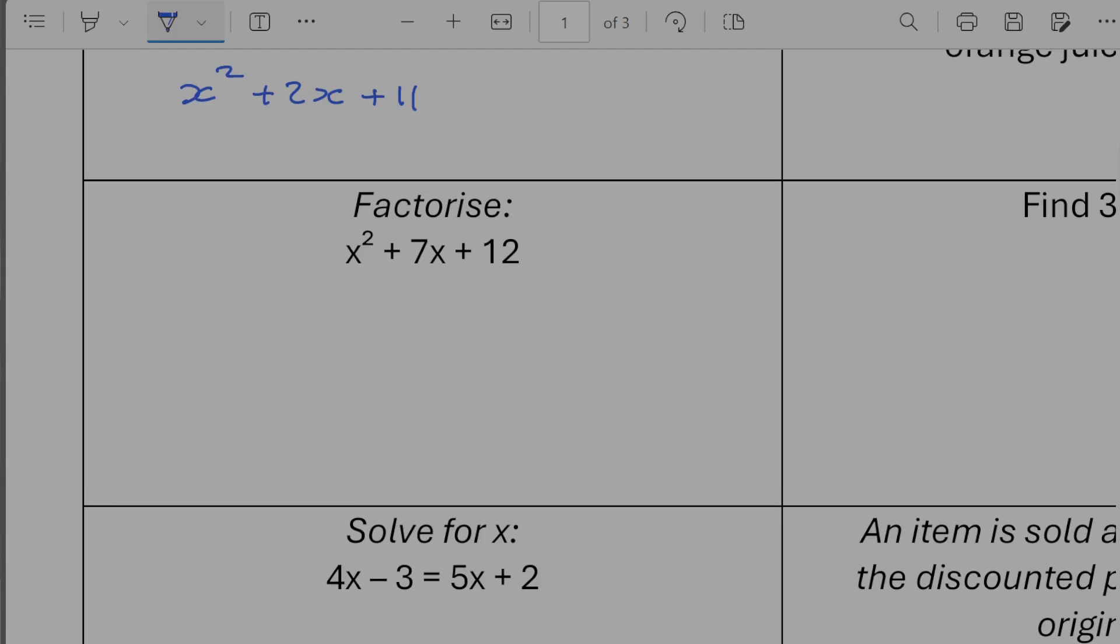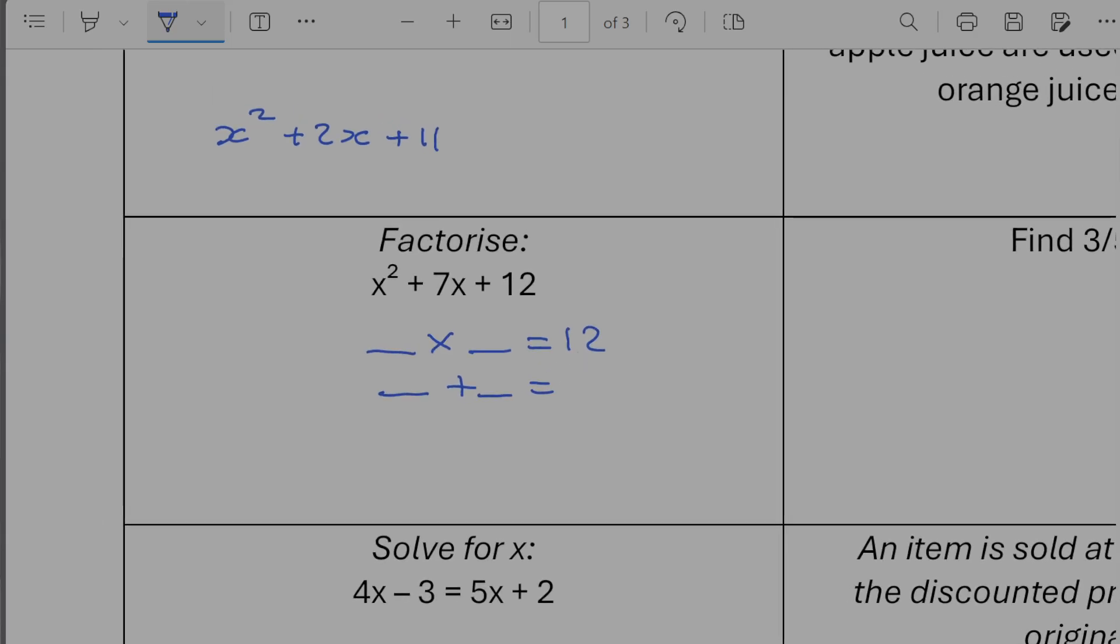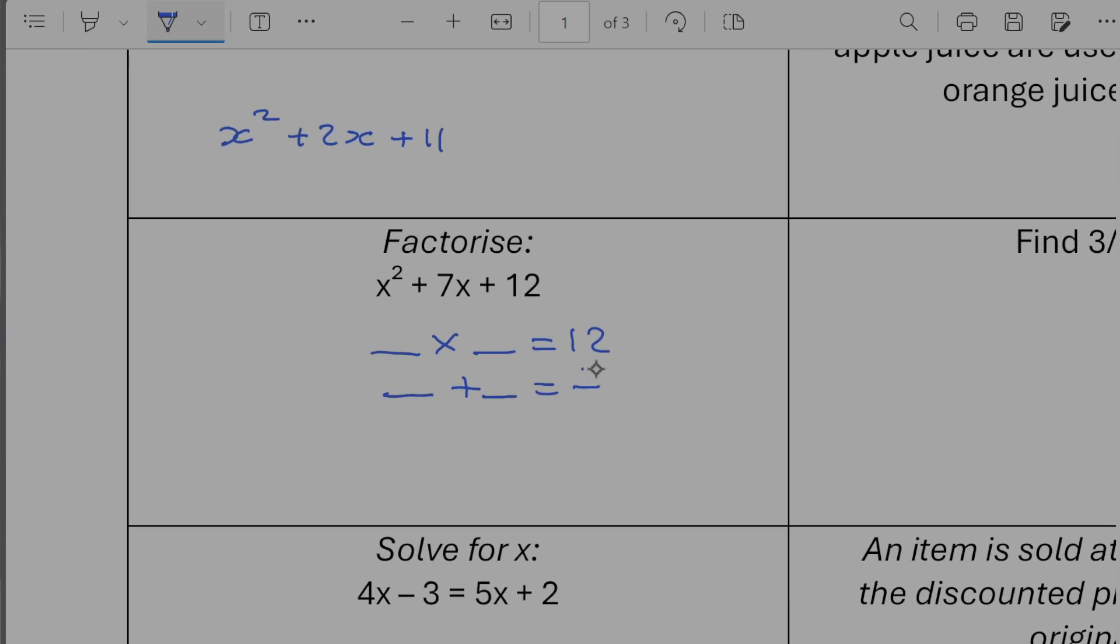Right, factorize. So I'm looking for two numbers that multiply together to make 12 and that add together to make 7. So those values are going to be 4 and 3. So I'm going to have x plus 4 and x plus 3.